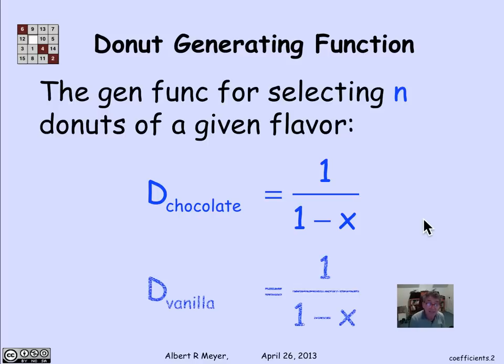Now likewise, the generating function for the number of ways to select vanilla donuts is also 1 over 1 minus x. And by the convolution principle, that means that the generating function for the number of ways to select a mix of chocolate and vanilla donuts.